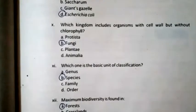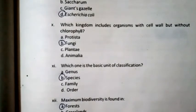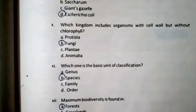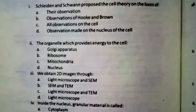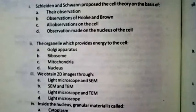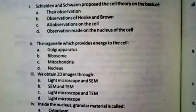Maximum biodiversity is found in forests. Now we come to unit number four, which is Cell and Tissue.